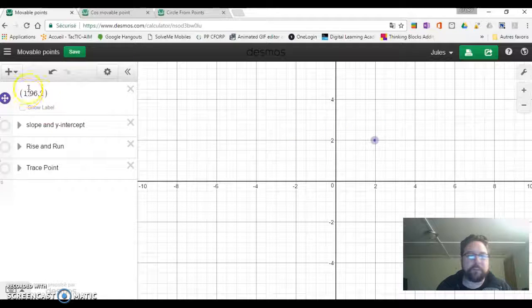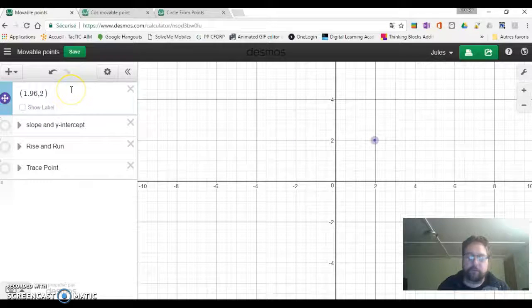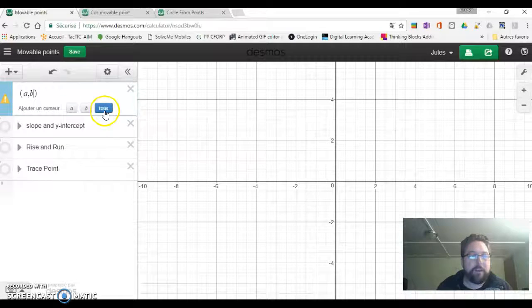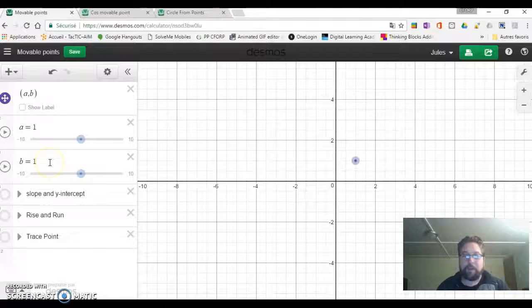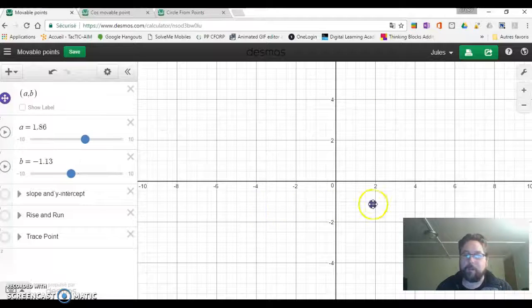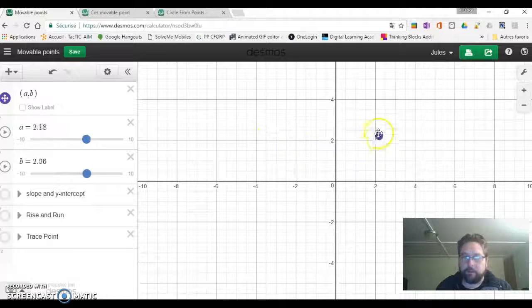But the power of Desmos is anytime you see a number, you can replace that with parameters. Let's do that right now: A and B. If we add these parameters, we can see that now we have a movable point, but they're parameters that are changing. So we can actually use these parameters in some equations.